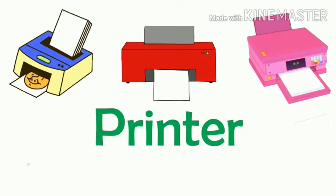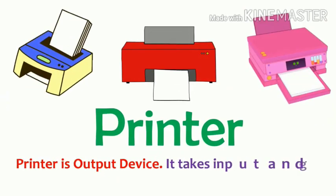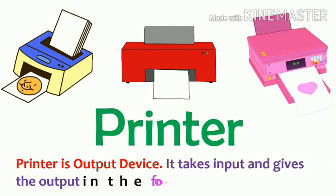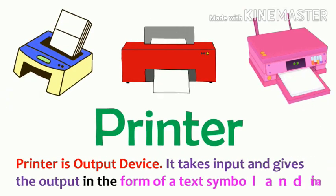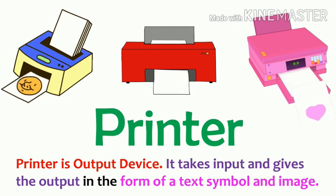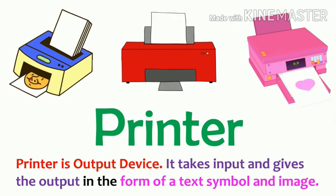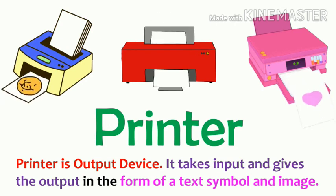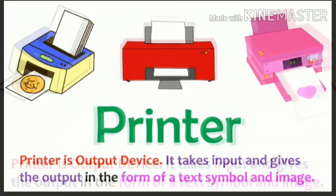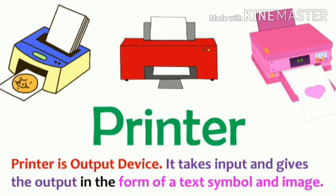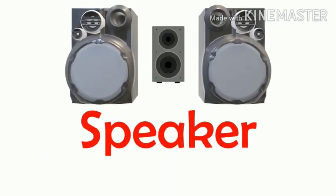Next one. What is this? This is a printer. Have you seen a printer? Yes, we see a printer at many places. So, printer is one of the output devices. It takes input and gives the output in the form of text and images.